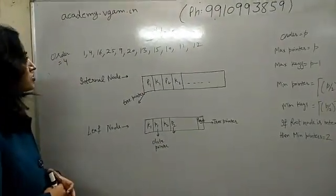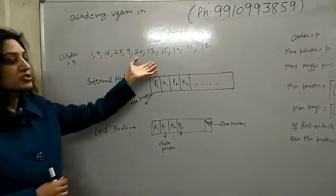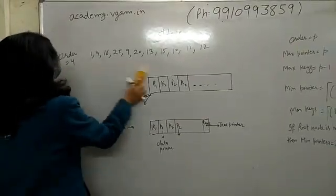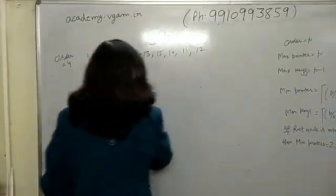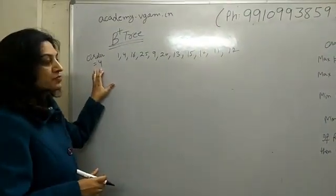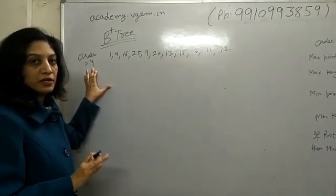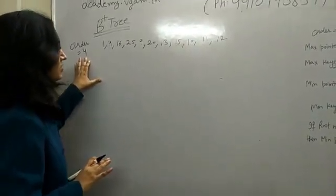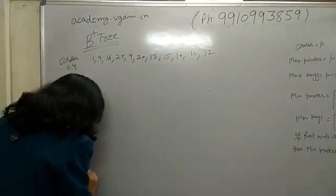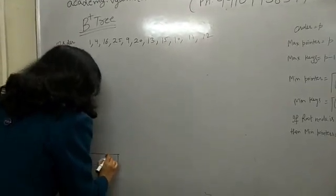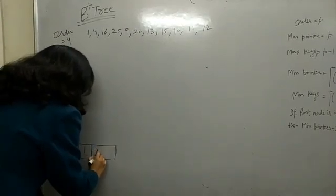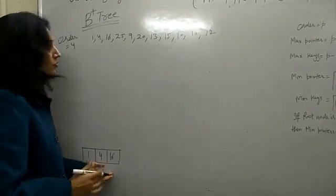Let's now construct a B plus tree with the given search keys and order 4. Order 4 means maximum 4 pointers are possible in a node, which means maximum 3 keys can be in a node. Keys are always in ascending order, so we start by placing 1, 4, and 16 — all in ascending order, no problem.